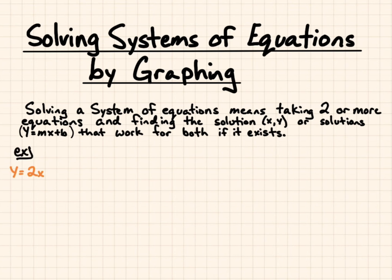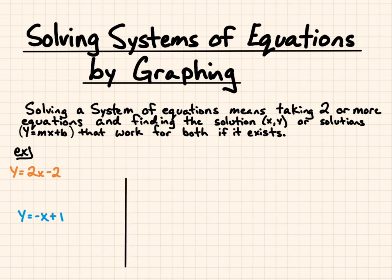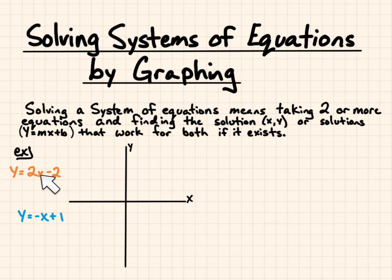Let's try an example. We have y equals 2x minus 2, and y equals negative x plus 1. We'll plot this on the coordinate plane with a y-axis and an x-axis. Both equations are written in slope-intercept form, y equals mx plus b, so we start at our b, which is negative 2, and put that on our y-axis.